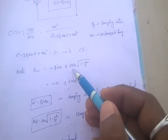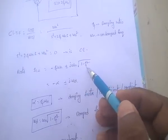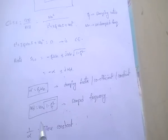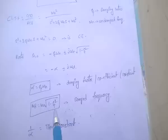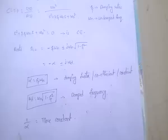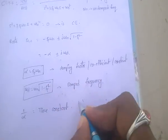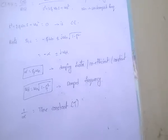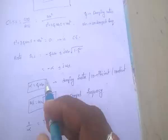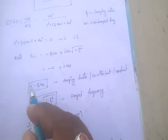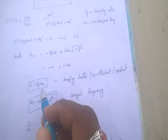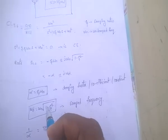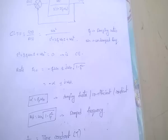ωd = ωn√(1 − ζ²), and ωd is called the damped frequency. The time constant T = 1/α. These formulas are very important: damping factor α = ζωn, ωn is the undamped frequency, damped frequency ωd = ωn√(1 − ζ²), and ζ is the damping ratio.